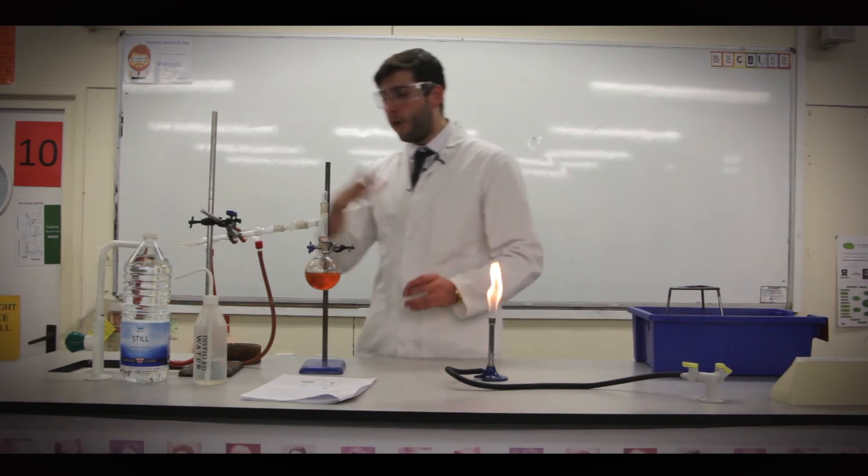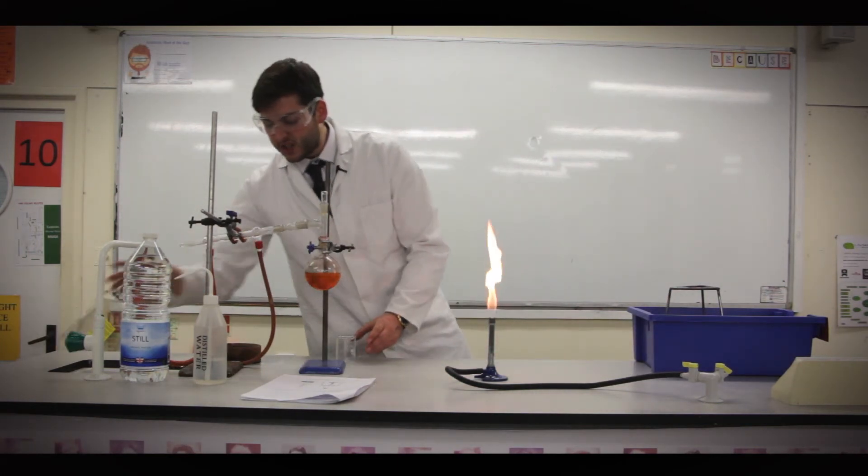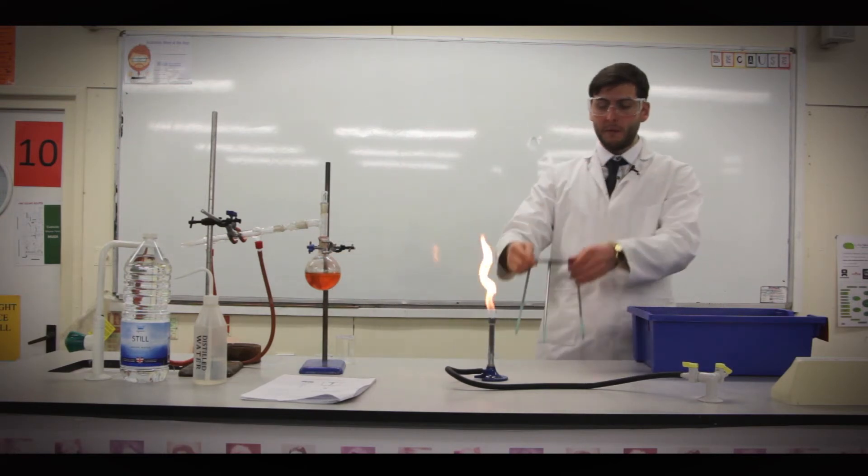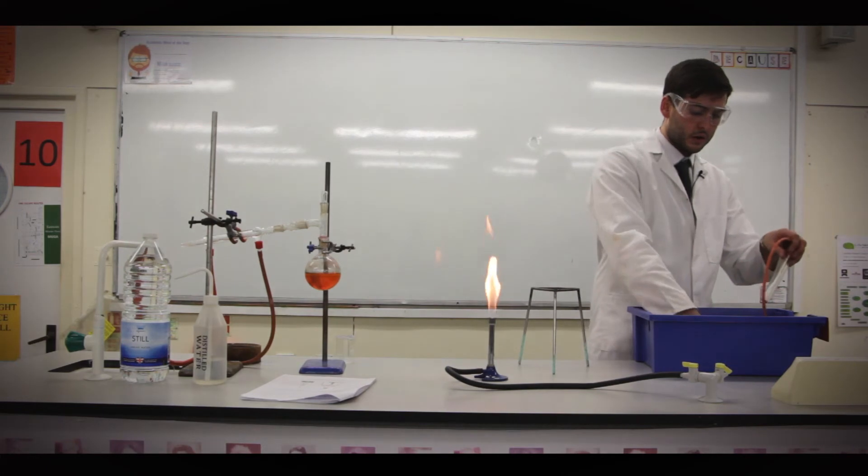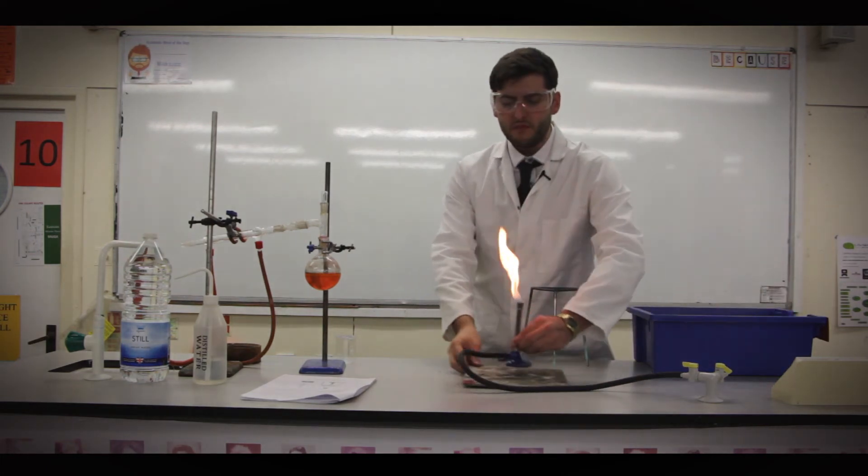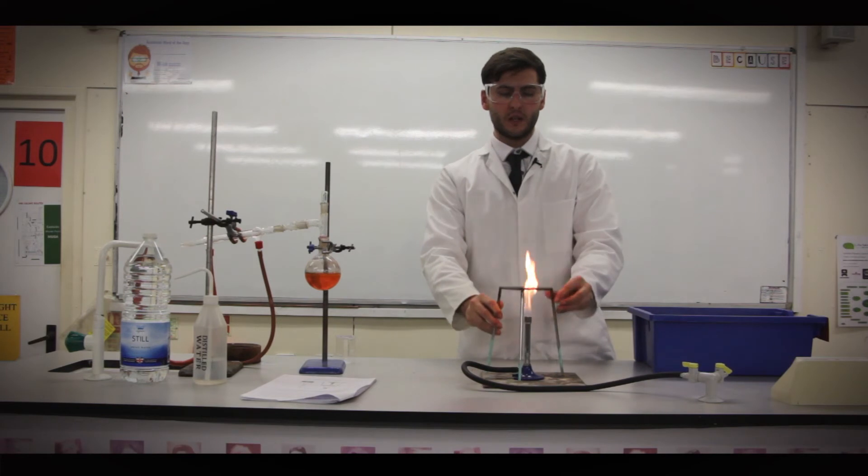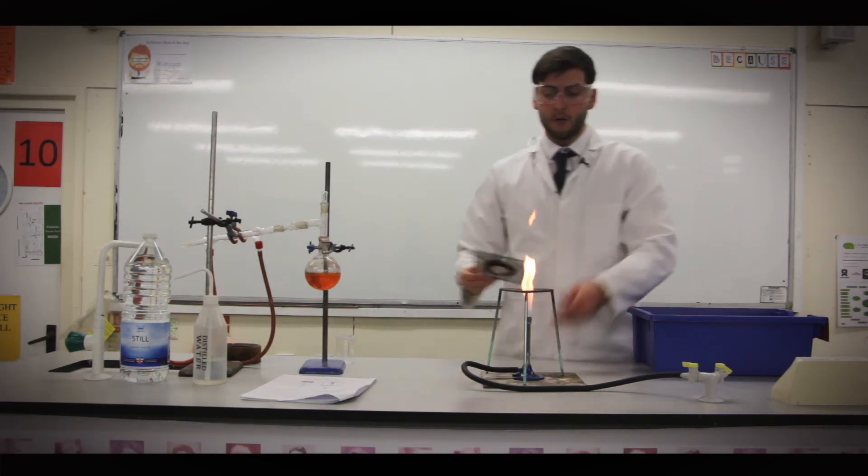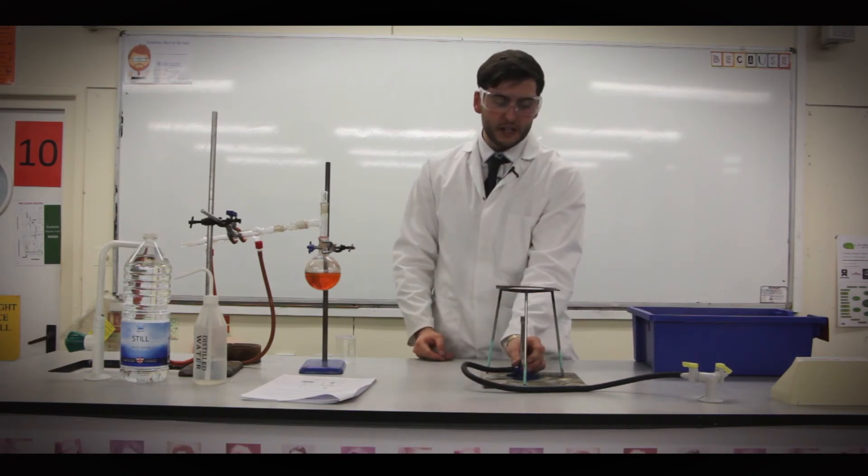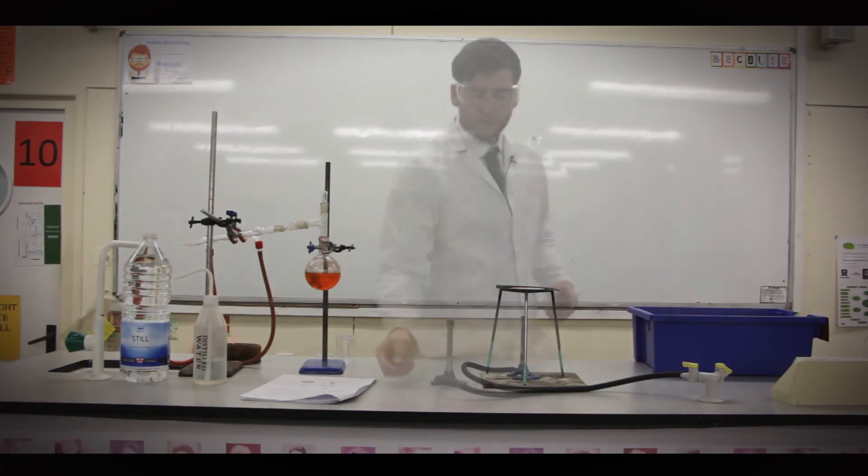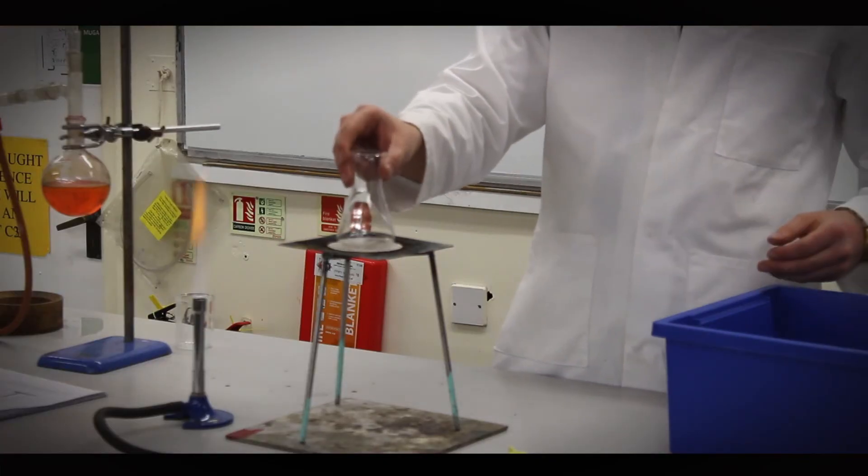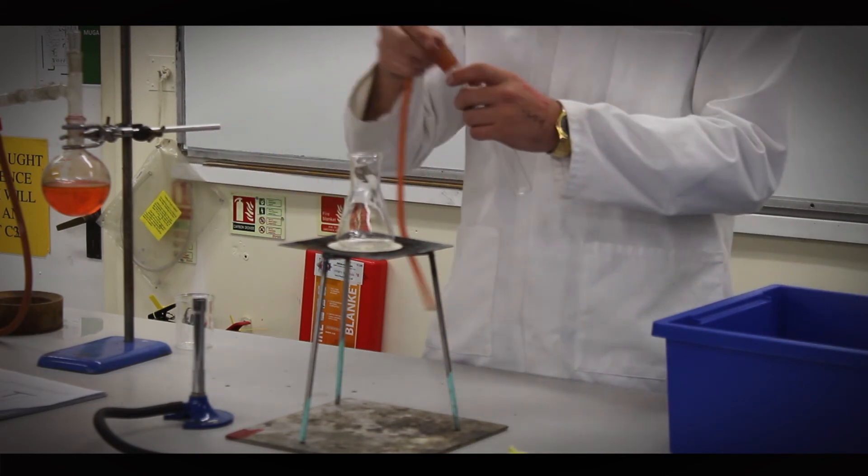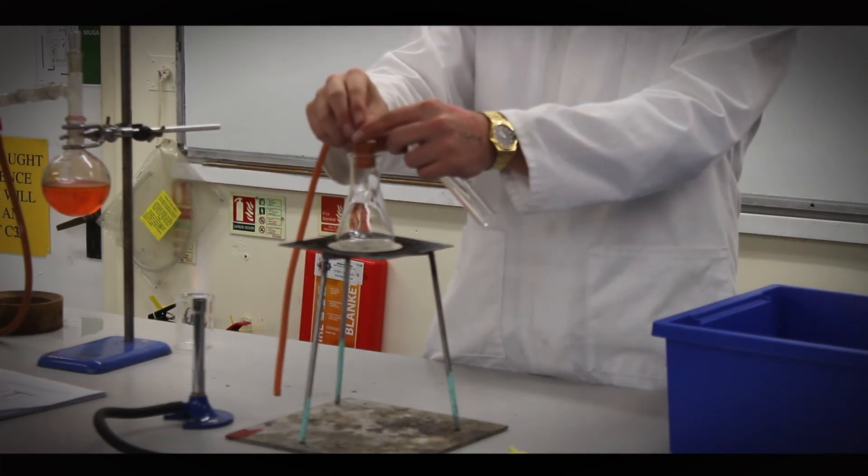Now unfortunately the AQA practical guide doesn't talk about this. It more mentions something you're probably more used to, these sorts of apparatus. Now I don't want to do any of this, but what you would do is you would heat up a conical flask on a gauze, on a roaring flame. Now I'm not going to do any of this, but I will show you roughly how we would set it up. What you'd do is you'd have a conical flask there, you would have some liquid in there, you would use the roaring flame, you would put this in the conical flask.